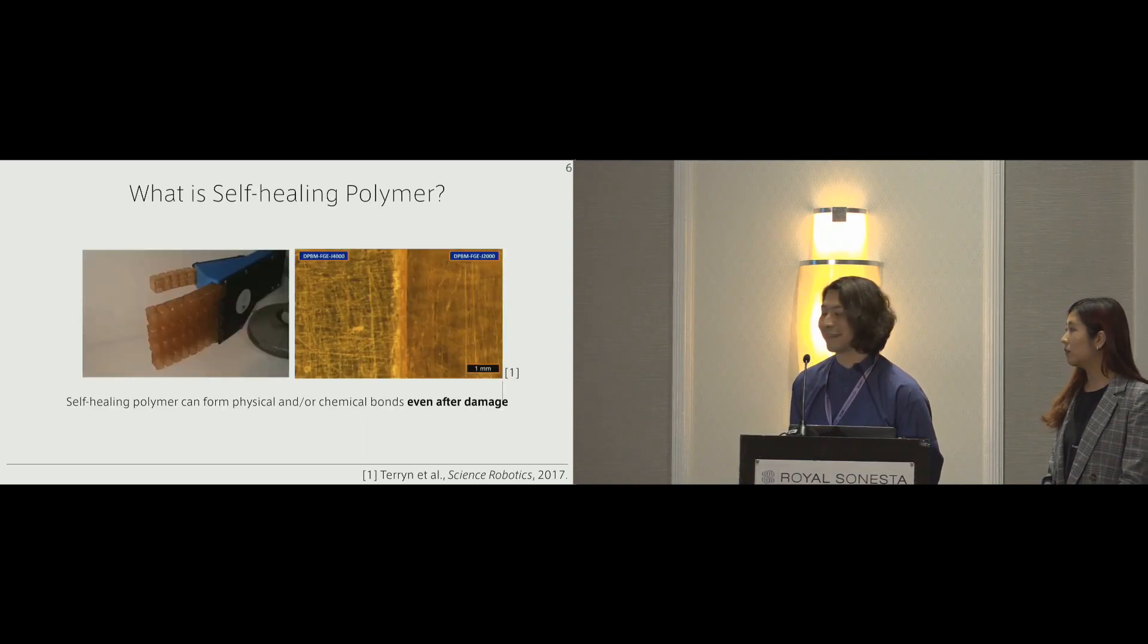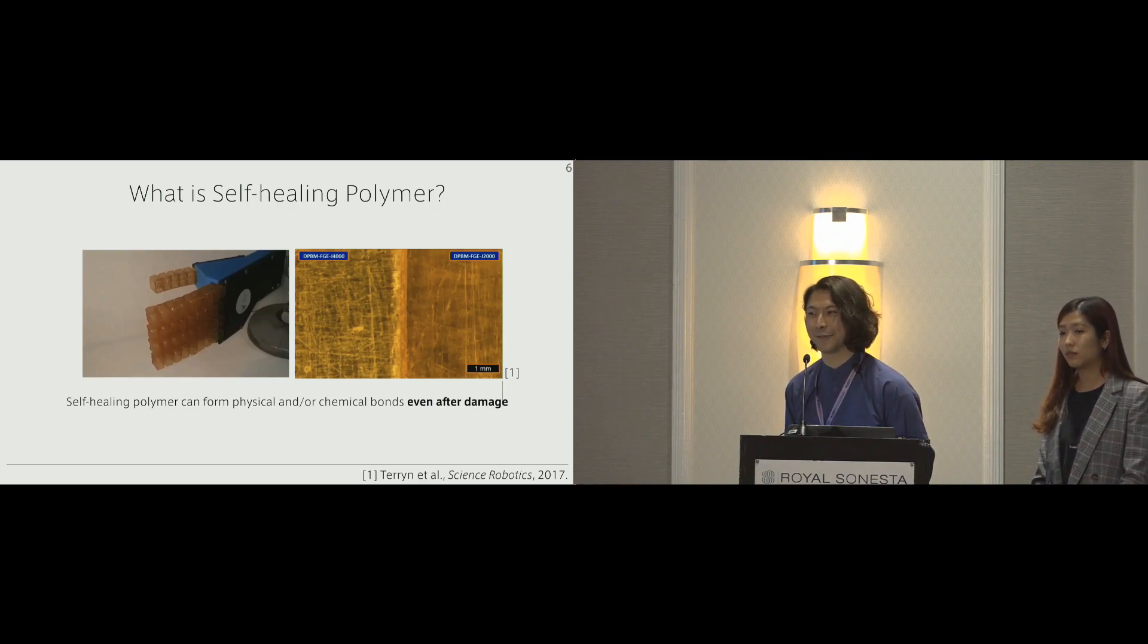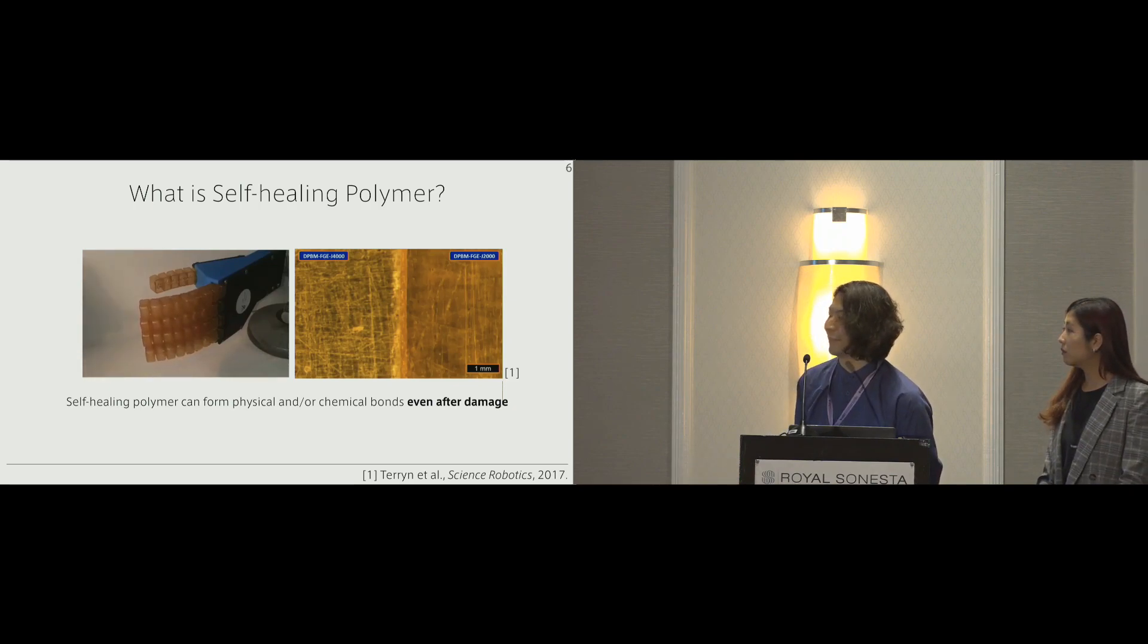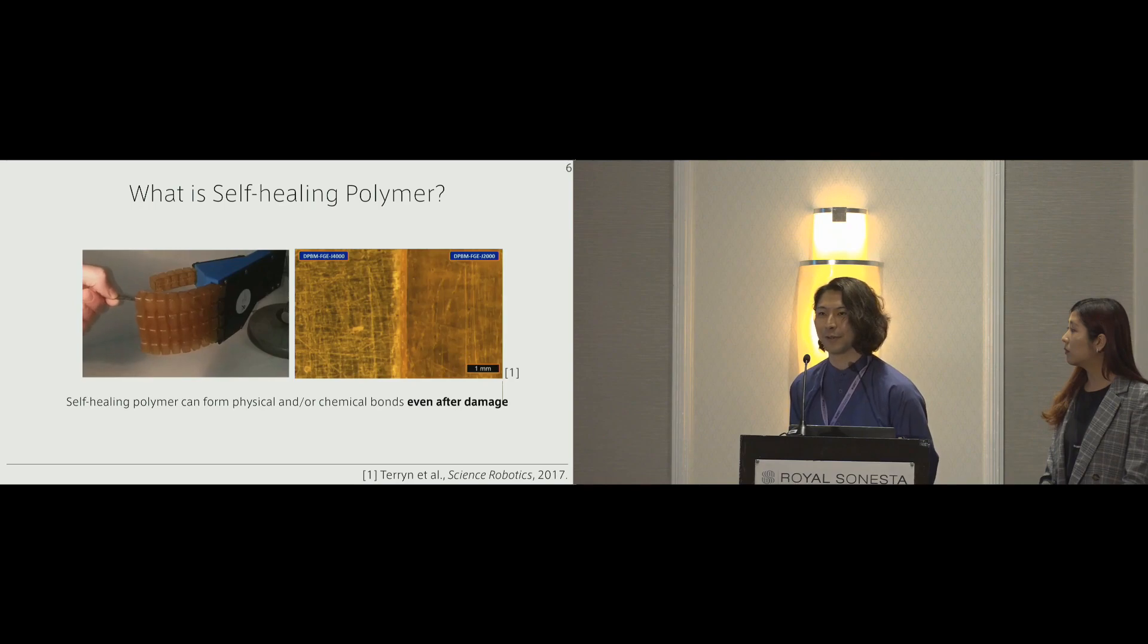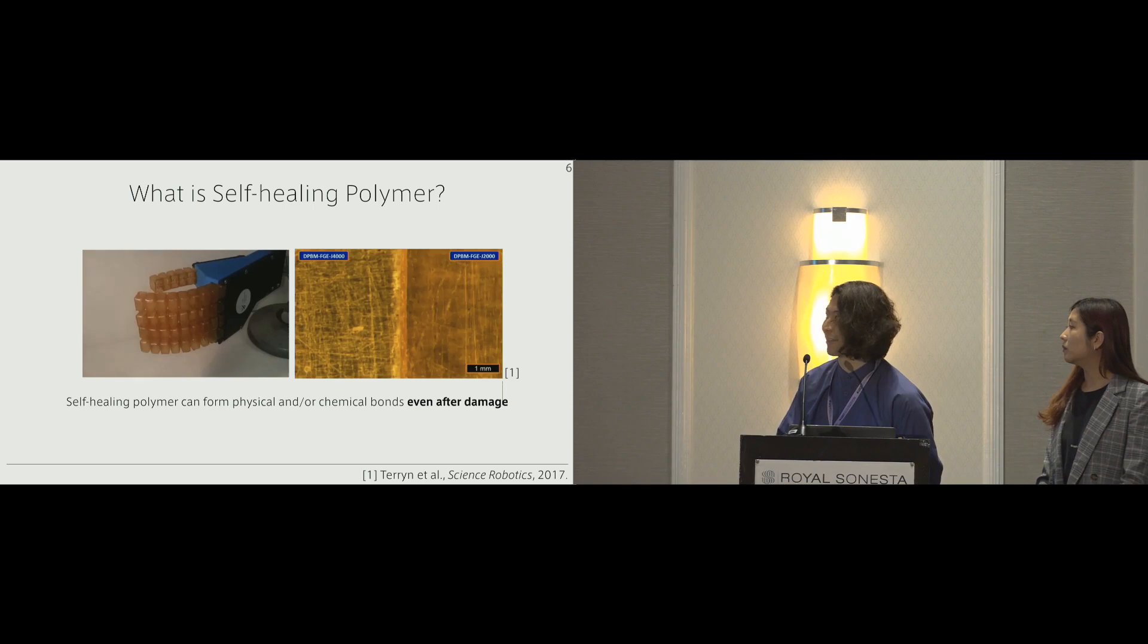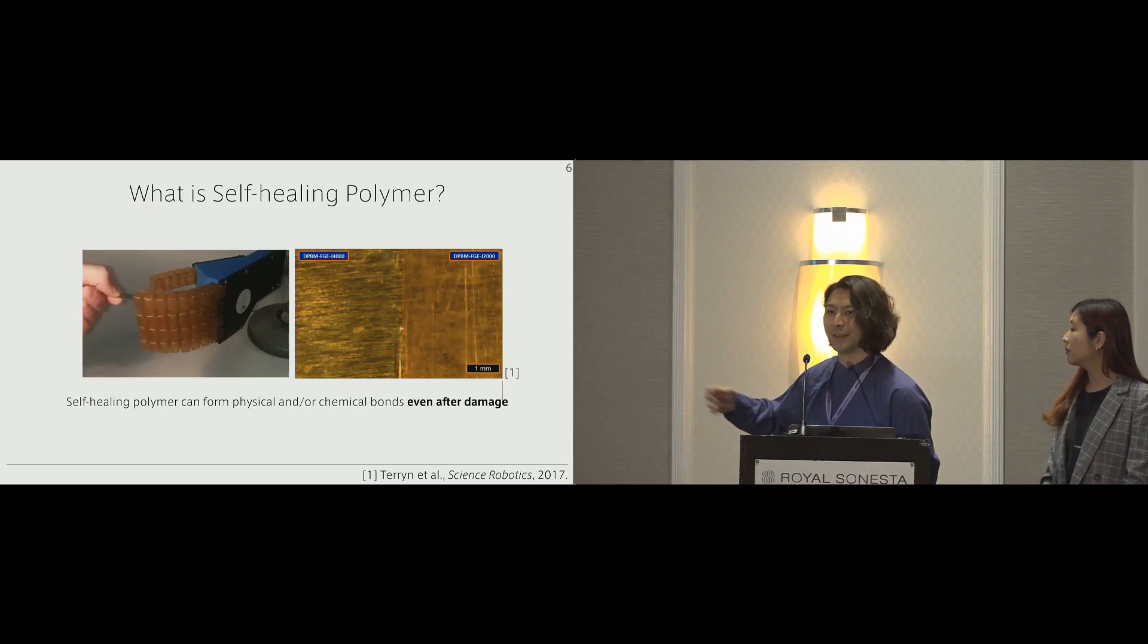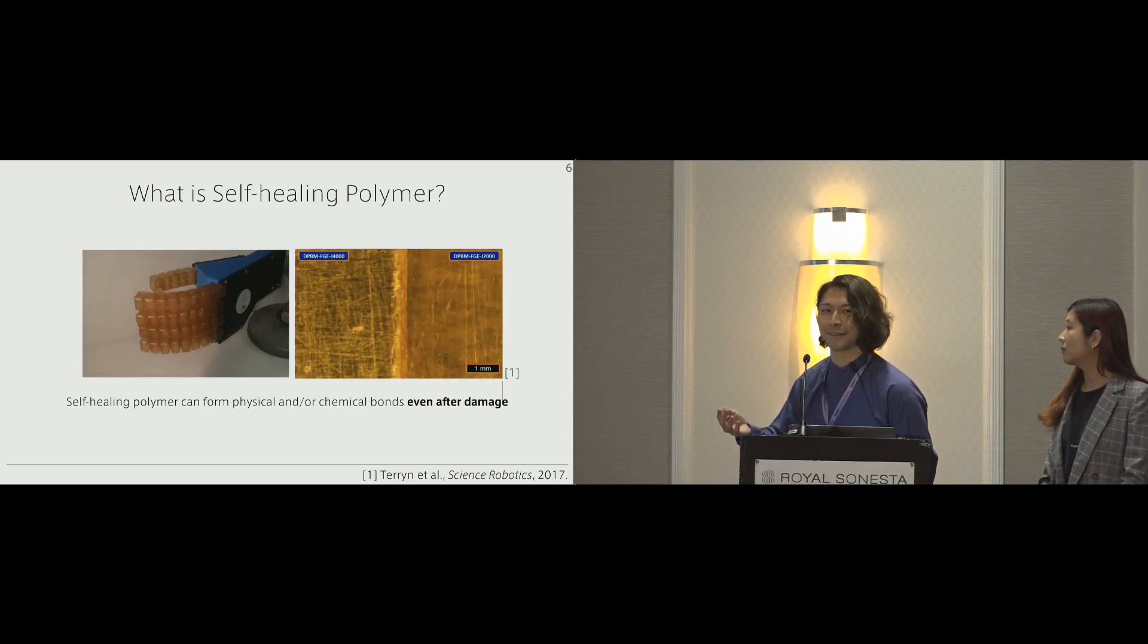So what is self-healing polymer? Different from a conventional polymer that cannot be healed after cut into pieces, there are some polymers called self-healing polymers that can form physical or chemical bonds after damage. As you can see in the left video, this is a pneumatic robot made from a self-healing material which is using a chemical reaction called Diels-Alder reaction. On the right, you can see the material starts to heal in about one hour if we apply 95 degrees Celsius of heat.